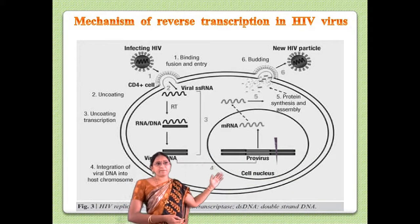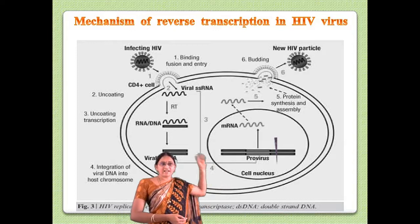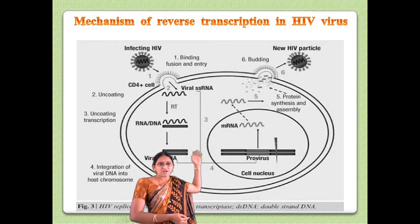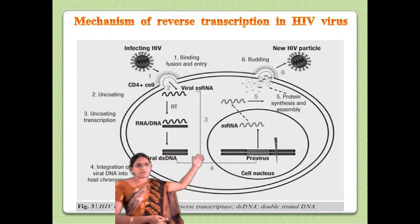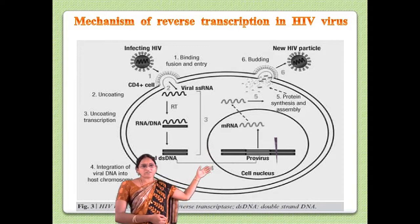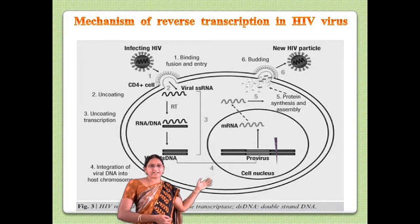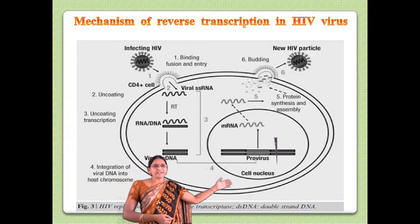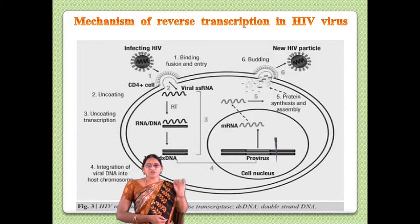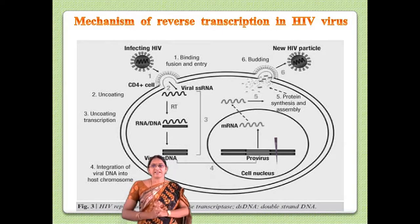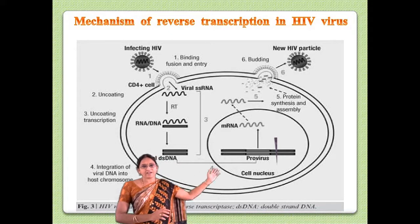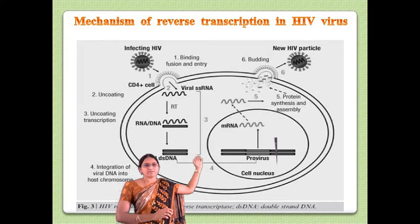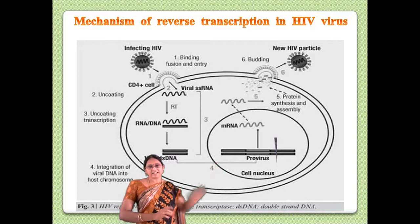As an example of how a retrovirus replicates in the host cell — take HIV virus. The HIV virus binds to the cell surface, fuses into the cellular membrane, and the viral genomic material enters the cytoplasm. Within the cytoplasm, the viral RNA undergoes reverse transcription to produce double-stranded DNA. The double-stranded DNA enters the host nucleus and inserts into the genome of the host cell — known as the provirus. The provirus undergoes transcription to produce mRNA, which then undergoes translation in the host cytoplasm to synthesize viral-specific proteins.